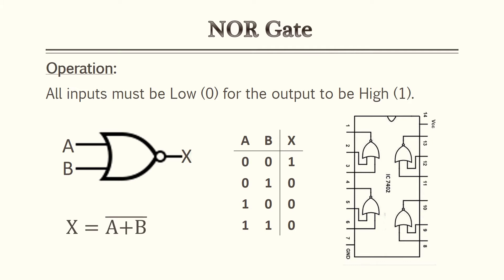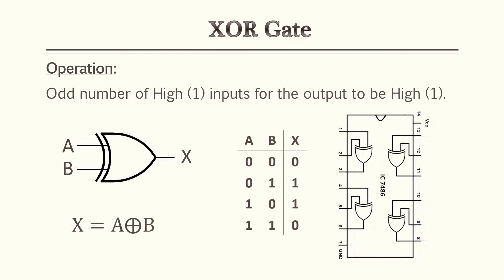Now we're going to go to our two exotic gates. I refer to the remaining gates as exotic due to the fact that they operate in an exotic way and their uses are very unique. For the exclusive OR gate, an odd number of high inputs will create a high output. So if you have multiple inputs, you count the number of highs and that determines your output. In Boolean algebra, this is translated with a plus sign with a circle around it.